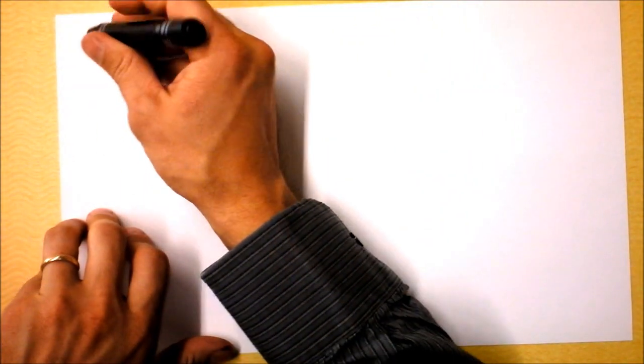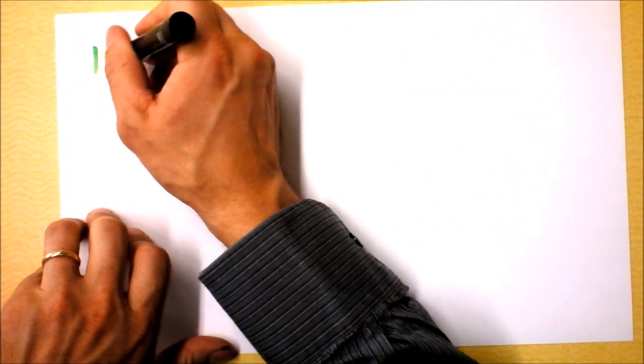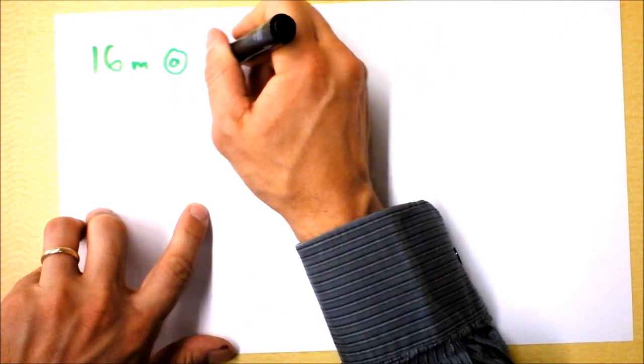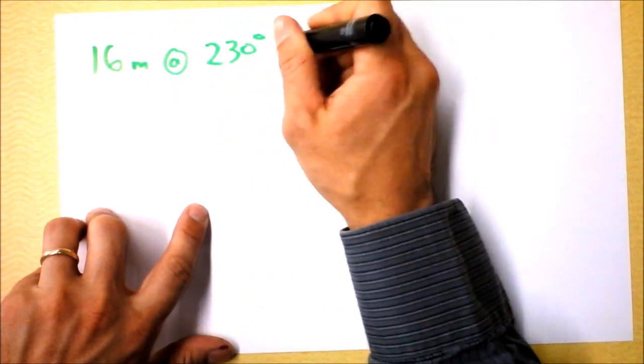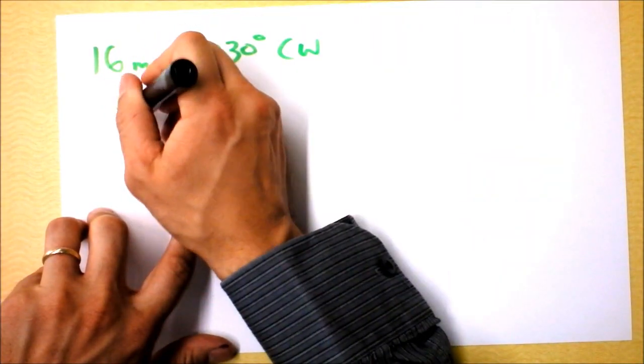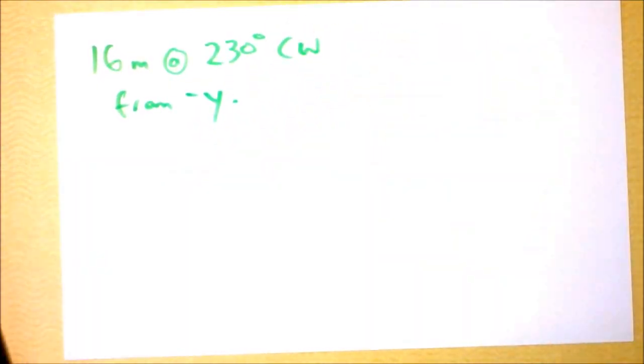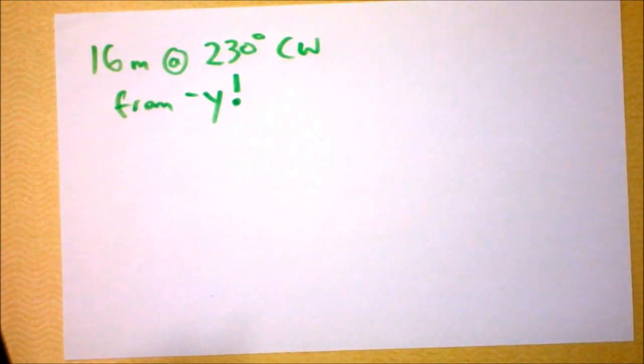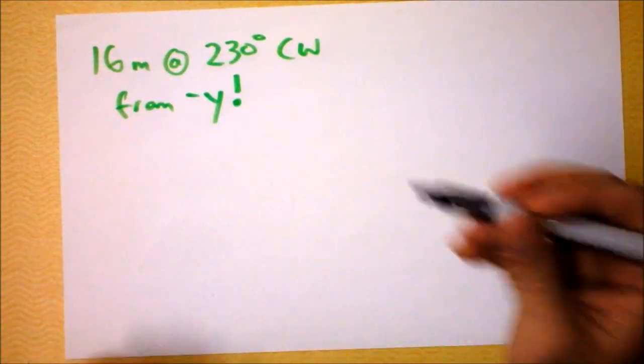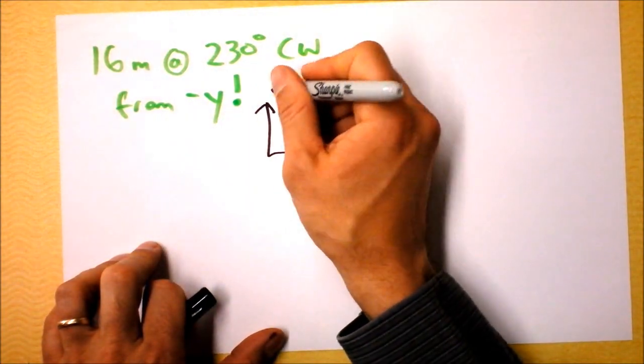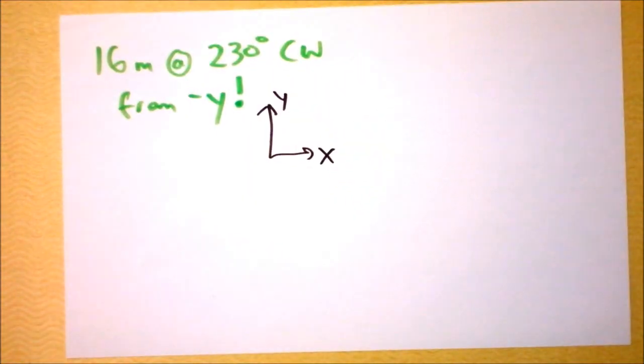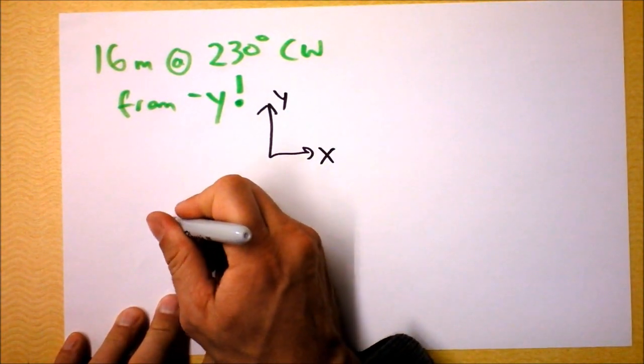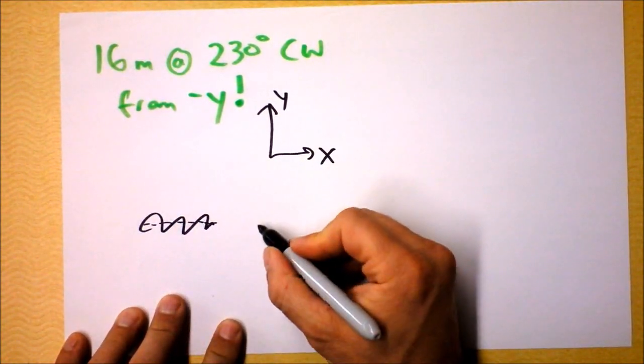Vector G, I'm making this up on the fly. Vector G is supposed to be 16 meters at 230 degrees clockwise from negative Y. Oh my goodness. Can you draw such a vector? First of all, you want to just establish X and Y in the traditional way. You'd be like Y and X like that. And then you draw negative Y. Here's negative Y. Is that negative Y? No, that's negative X. Okay, here's negative Y.